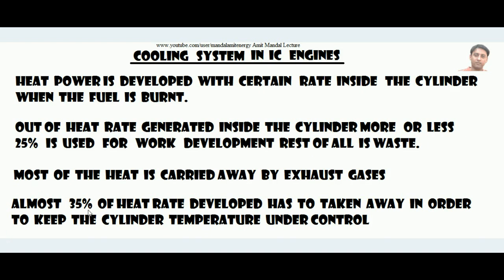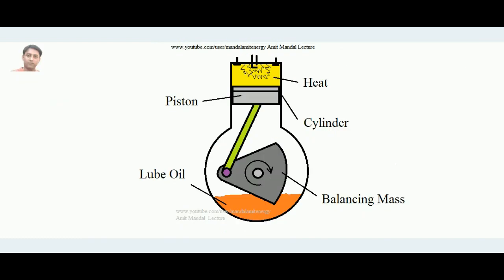Still about 35 percent of the heat developed has to be taken away to keep the cylinder temperature under control. The engine performs its best at a particular optimum temperature — if the temperature is either above or below that optimum, performance becomes poor. If we are not cooling the cylinder head, temperature can go beyond the optimum and lead to poor engine performance as well as other problems.